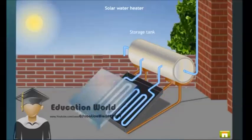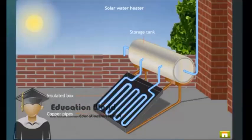The solar water heater consists of an insulated box that is painted black from inside. In this box, copper pipes are fitted in the form of a coil. These copper pipes are painted black from outside.